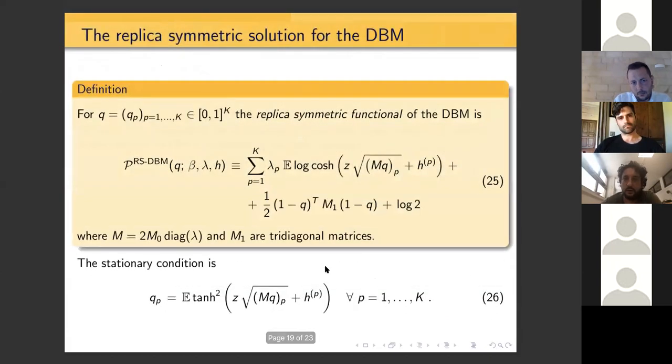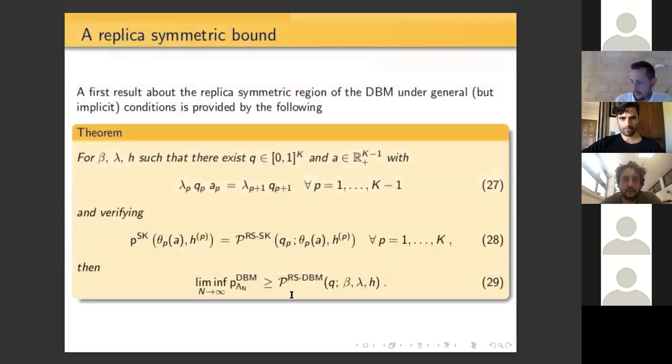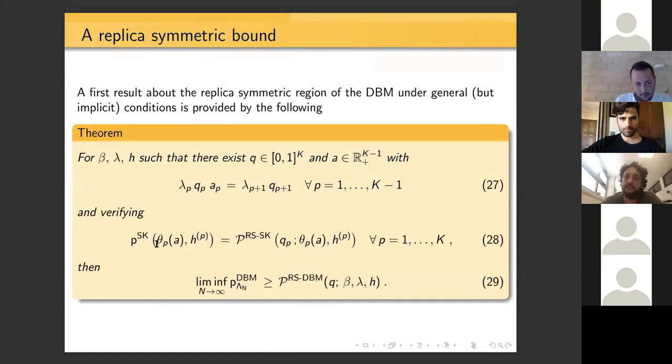Very quickly, the definition of the replica symmetric functional. This is the function that you have to look at. This is the replica symmetric functional that you obtain simply comparing your model with some one-body interaction. The stationarity condition is this one. Recently it has been proved by Genovese that actually this condition is obtained by a min-max procedure. The main theorem is that under some conditions on the parameter (β, λ, h) of the phase diagram, this replica symmetric functional is a lower bound for the thermodynamic limit of the pressure.